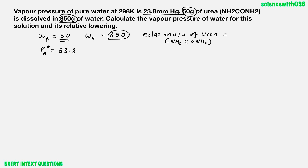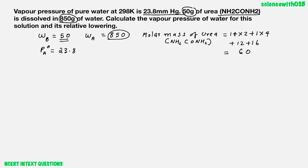Molar mass of urea we can find from the formula. The formula is NH2-CO-NH2. How many nitrogen? 2. So 14 into 2, plus how many hydrogen? 4. So 1 into 4, plus 1 carbon and 1 oxygen. On calculating, you will get 60. So the given values are: molar mass of urea, mass of the solvent, mass of the solute, and vapour pressure of the pure solvent.